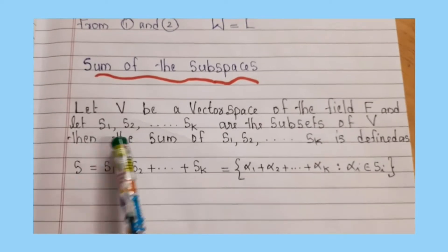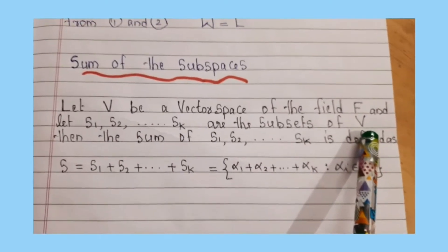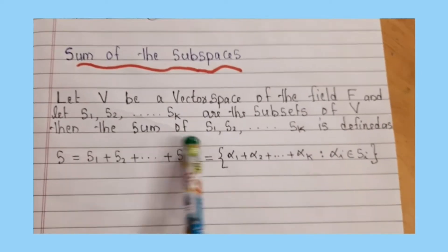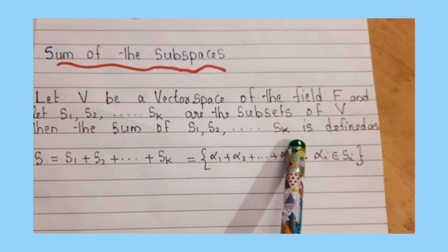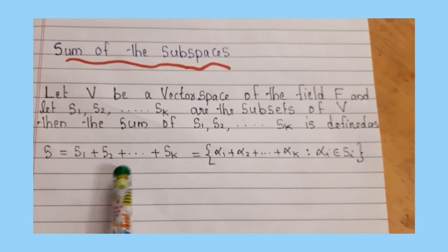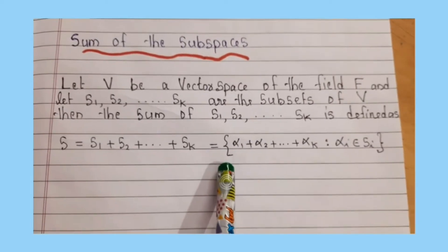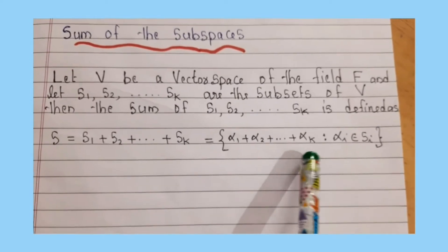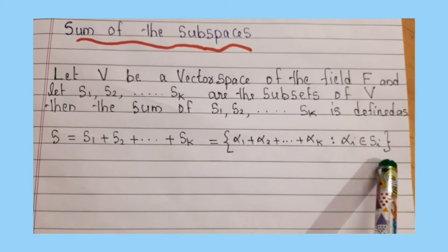Now if S1, S2, ..., Sk are subspaces of V, then the sum S1 + S2 + ... + Sk equals the set of alpha1 + alpha2 + ... + alpha k such that alpha i belongs to S i. Clear?